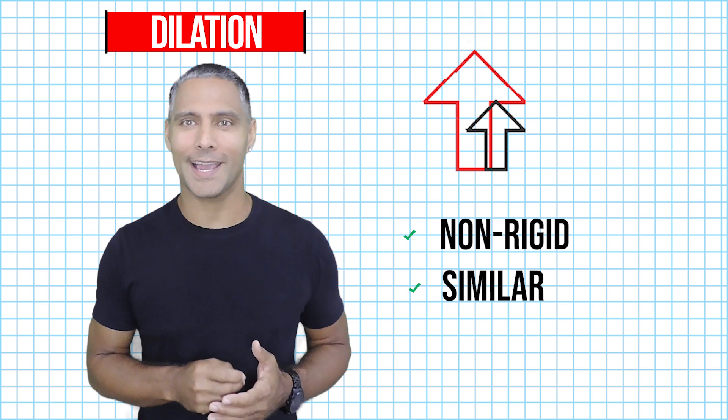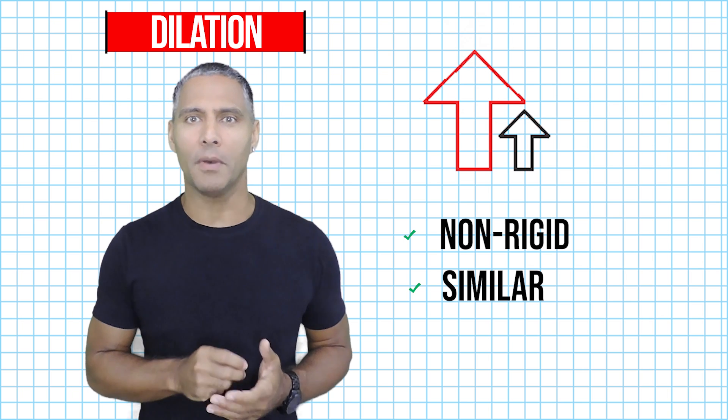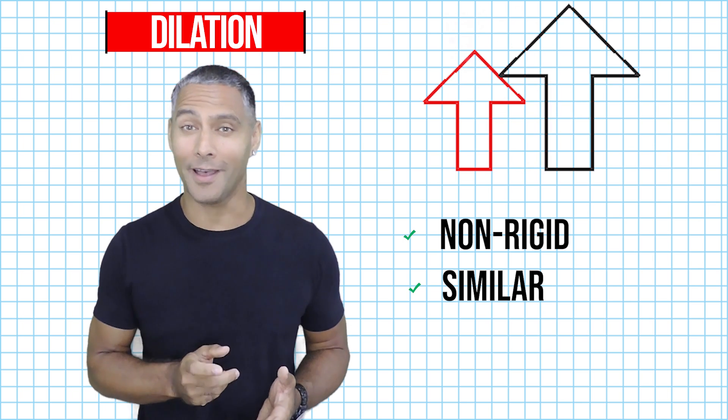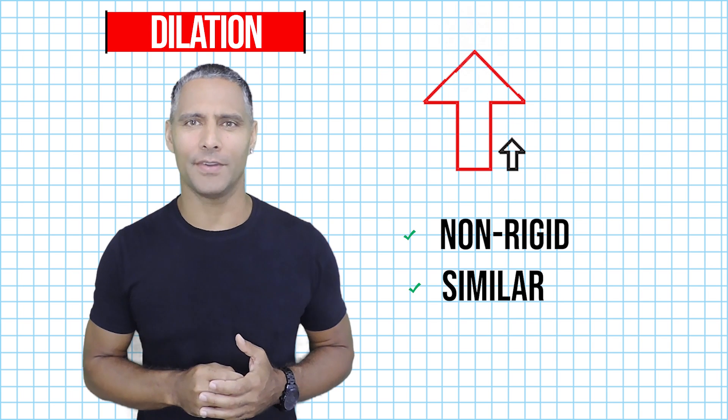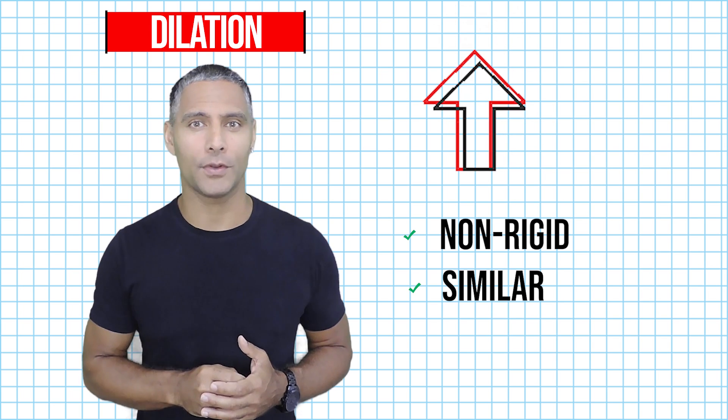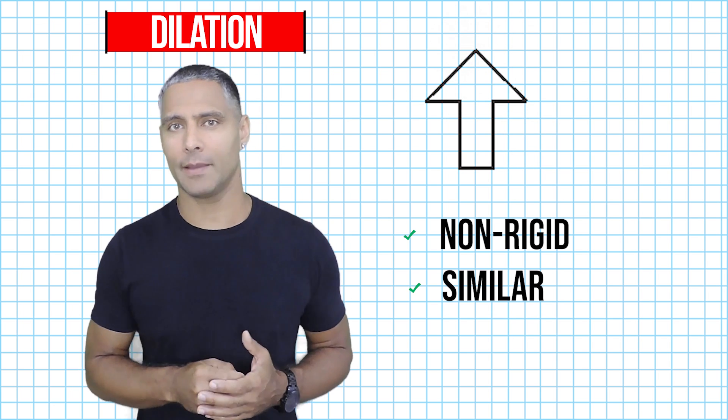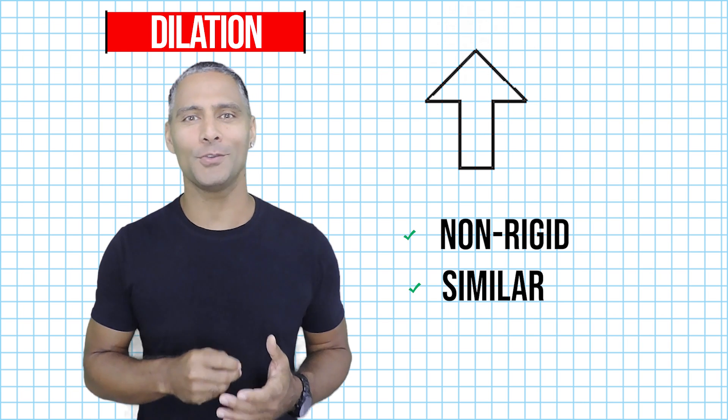If one side became three times as large, all other sides must be three times as large or scaled up by a factor of three. The dilation of an object can be performed in reference to a fixed point, which I examine in my dilation videos found on my YouTube channel.